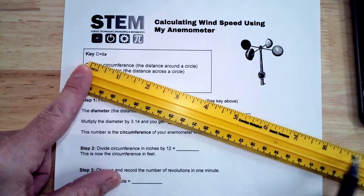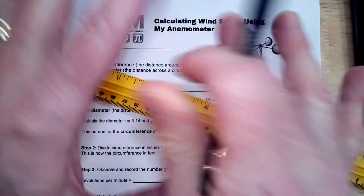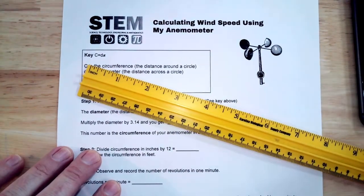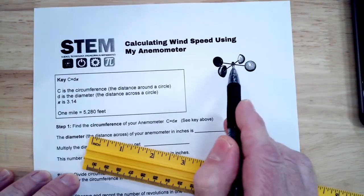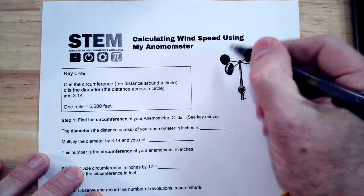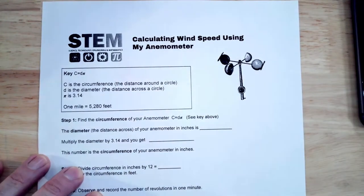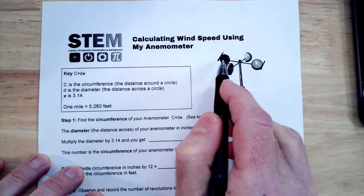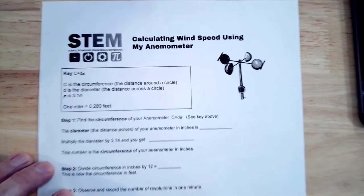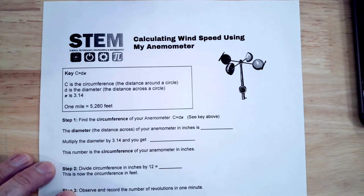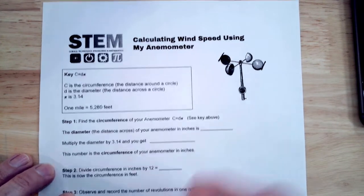So the edge of the cup to the edge of the cup. I can't put an anemometer underneath this camera, there's not enough room, so we'll just use this little display here. So we're going to measure the distance across your anemometer and let's just pretend that this is, let's just say that's 10 inches across.